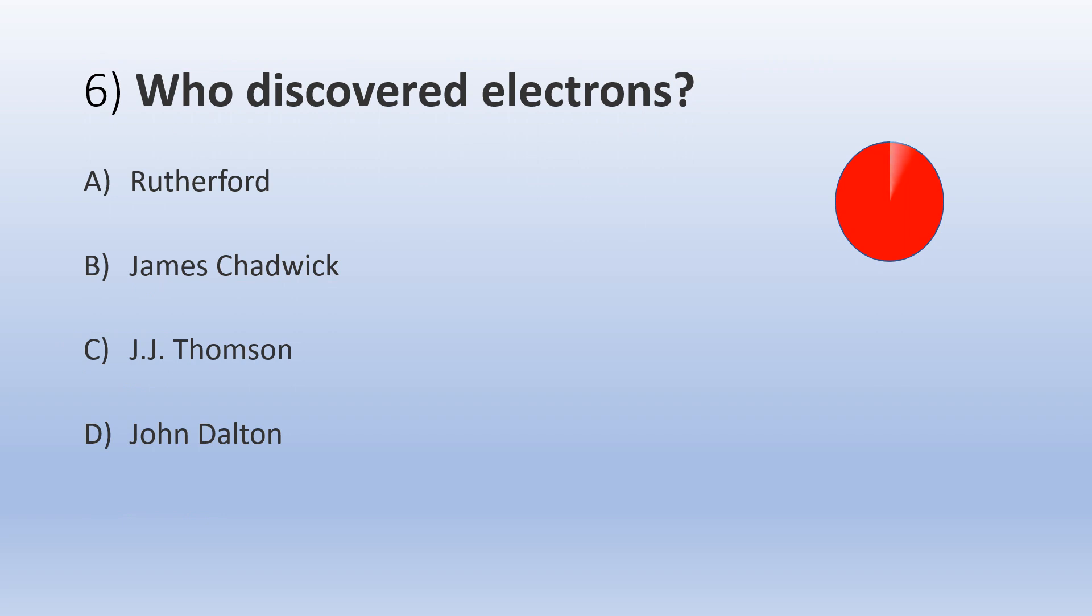We'll move on to the next question. Question number six: Who discovered electrons? A) Rutherford, B) James Chadwick, C) J.J. Thomson, and D) John Dalton.